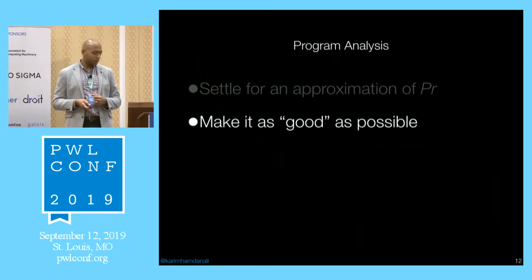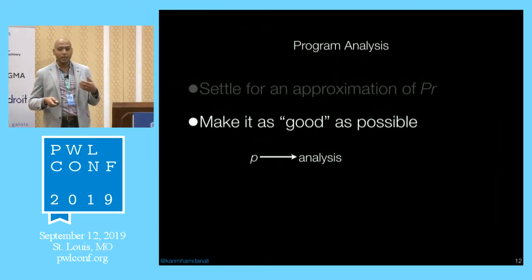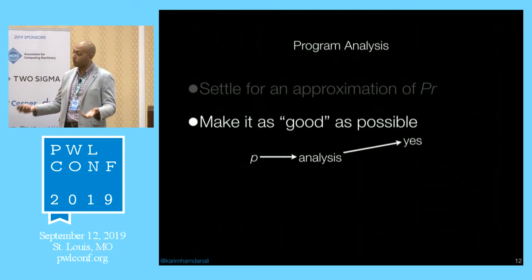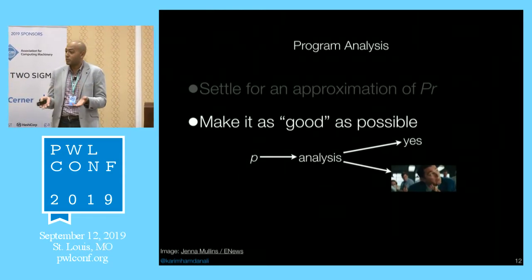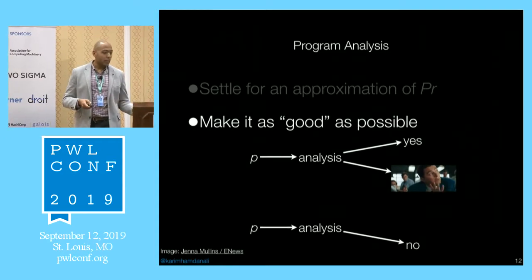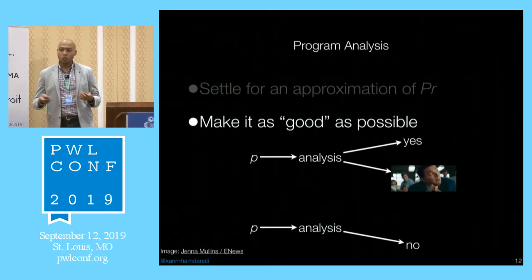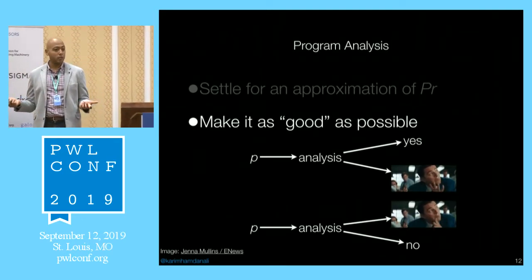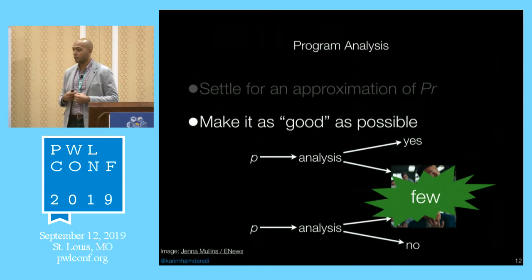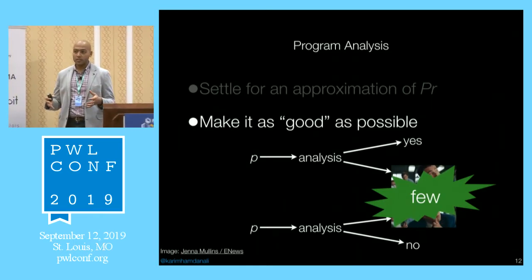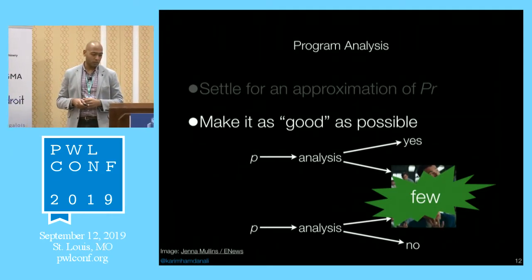You run an analysis on a program, and the analysis tries to validate whether a property exists. It will tell you yes if the property exists, or maybe if it doesn't know — that's the safe approximation. Alternatively, you can run the analysis to invalidate a property, expecting a no answer or maybe. The goal of our community is to make those maybes as few as possible, making results mostly either yes or no.